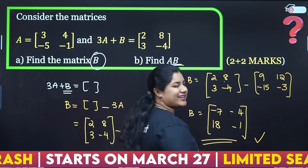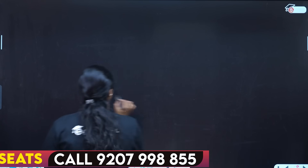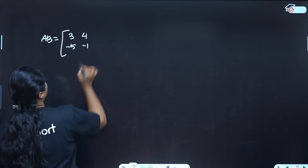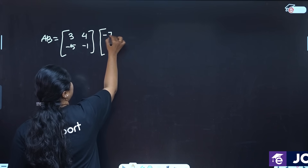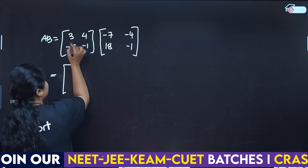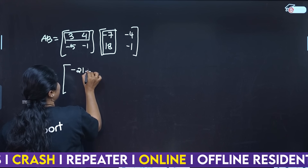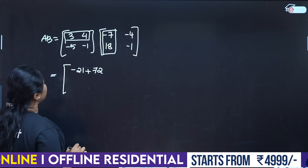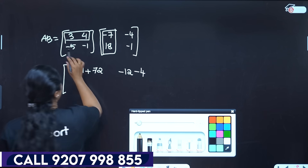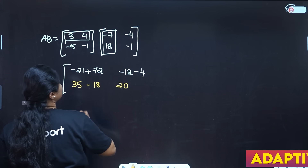Now we will multiply A and B to find the product AB. A equals [3, 4; minus 5, minus 1] and B equals [minus 7, minus 4; 18, minus 1]. First row, first column: 3×(minus 7) plus 4×18 equals minus 21 plus 72. First row, second column: 3×(minus 4) plus 4×(minus 1) equals minus 12 minus 4. Second row, first column: (minus 5)×(minus 7) plus (minus 1)×18 equals 35 minus 18. Second row, second column: (minus 5)×(minus 4) plus (minus 1)×(minus 1) equals 20 plus 1.